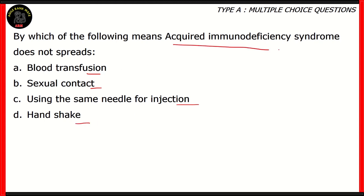So acquired immunodeficiency syndrome, which is also known by its acronym AIDS, is what we call a sexually transmitted disease, which means option B, sexual contact, is a way by which AIDS can spread. So that means, according to our question, the option is incorrect.